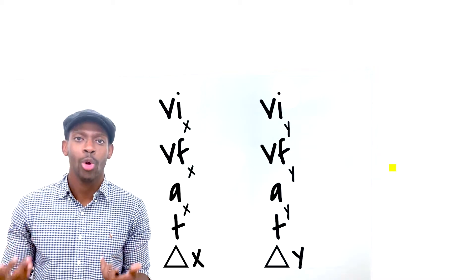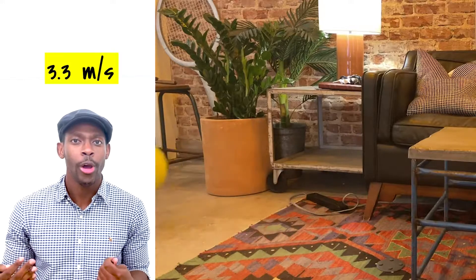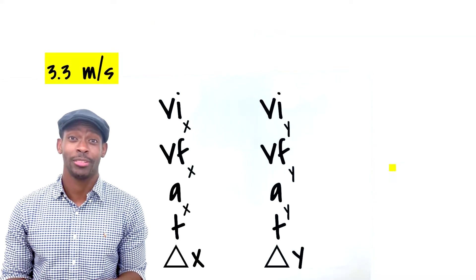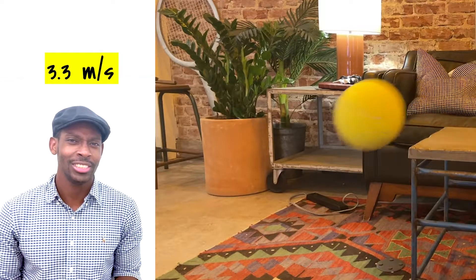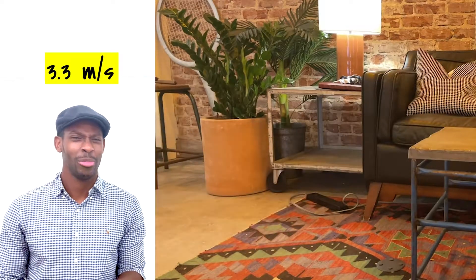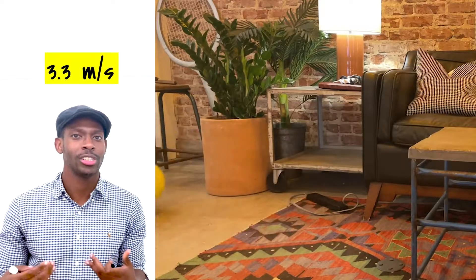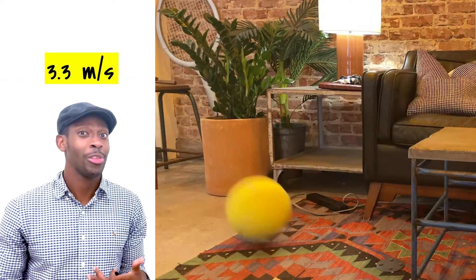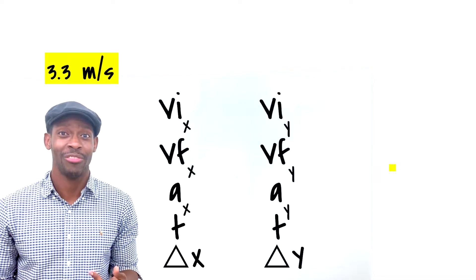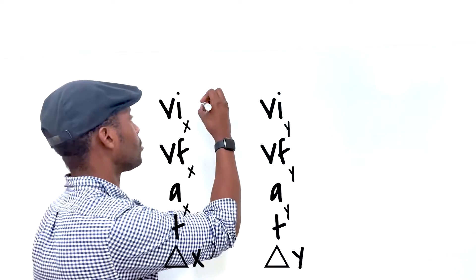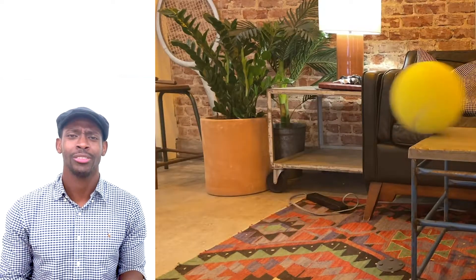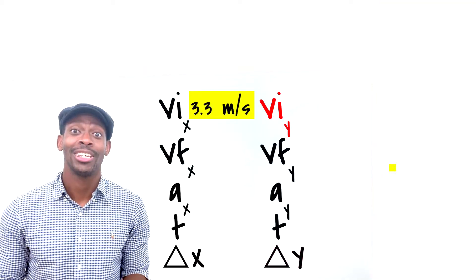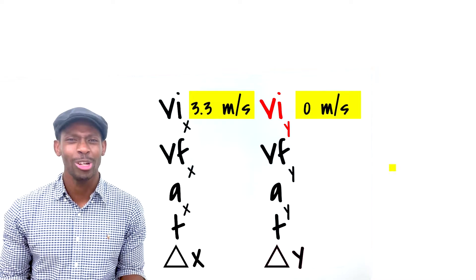This ball is rolling on the table at 3.3 meters per second. Look at this ball. Is it moving on both axes right at the beginning? No, it's just moving horizontally right upon launch. So therefore all 3.3 meters per second of that velocity is horizontal. Is it moving vertically at all right upon launch? No. We can assume that the initial velocity on the y-axis is zero.